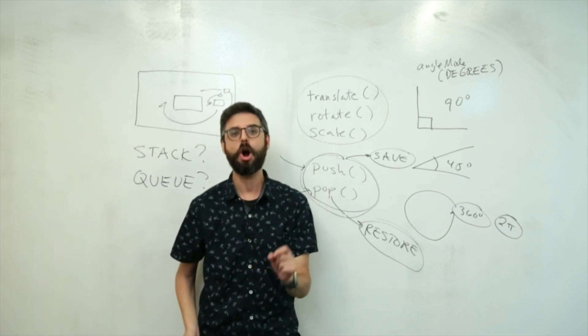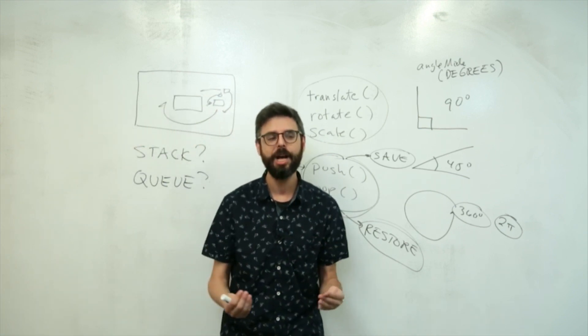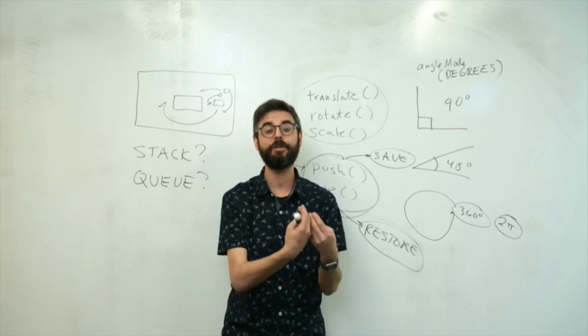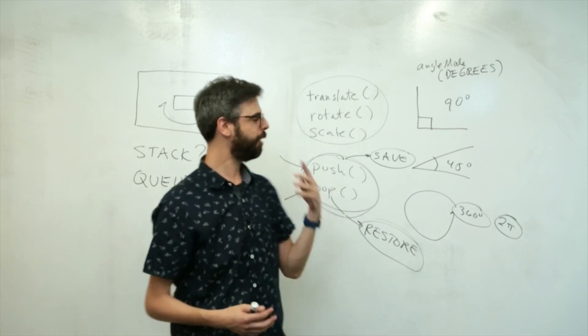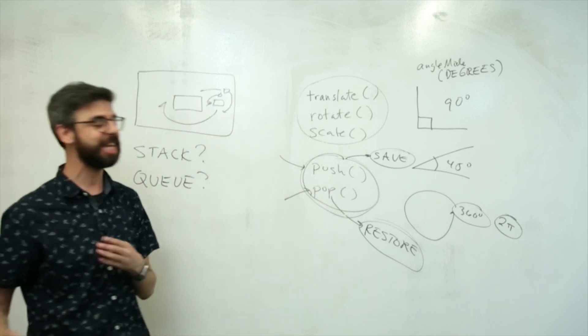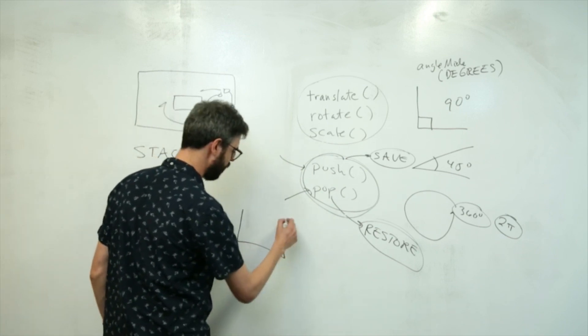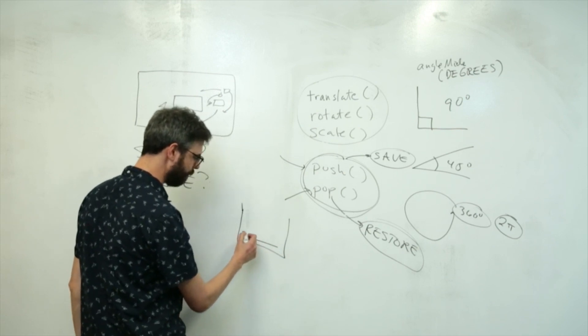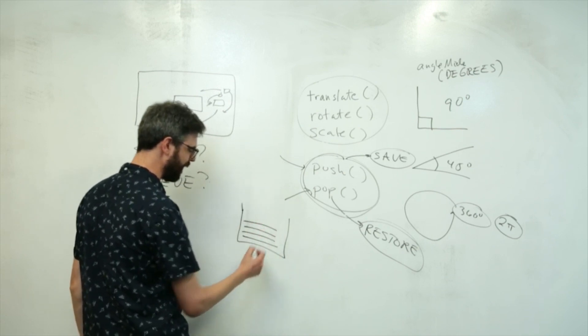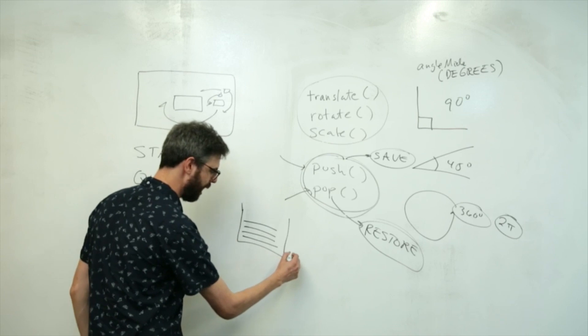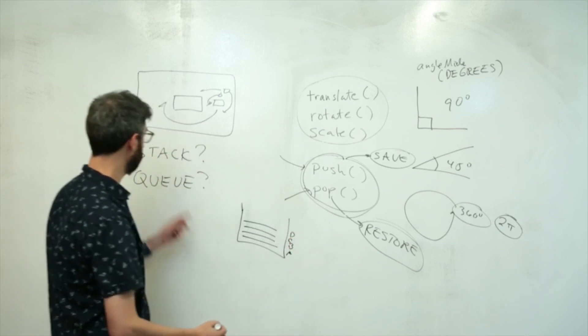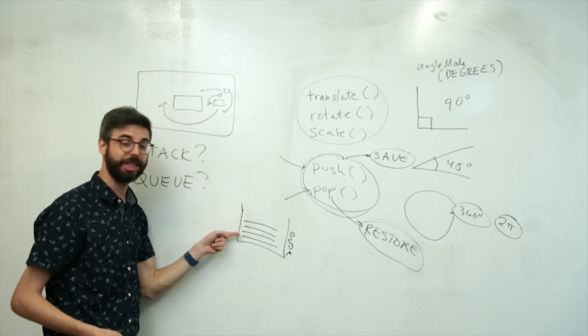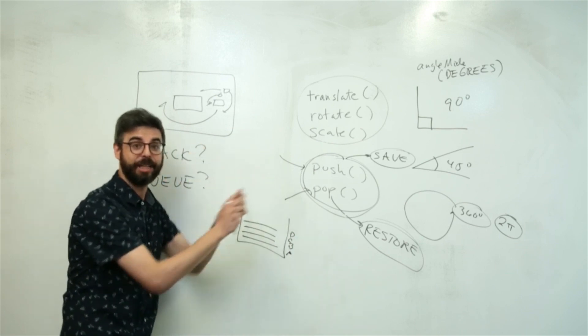So push and pop are terms that apply to saving and restoring information in a stack. It's called a stack because you can think of it like a stack of paper. So if this is like a bin, your inbox, so to speak, and I put paper A in there, then paper B, then paper C, then paper D, they're stacking up. A, B, C, D. So push is pushing the things onto the stack, adding to the top of the stack.